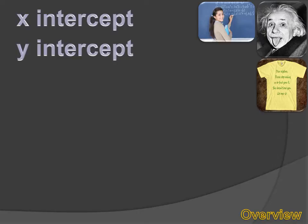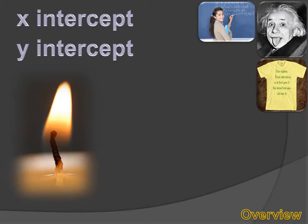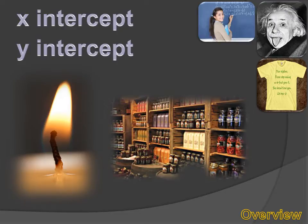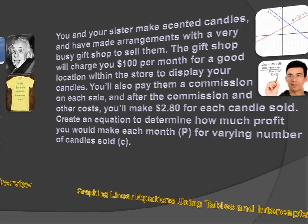And in order to make this kind of real, let's pretend that you've got a business — you and your sister make scented candles and have made an arrangement with a very busy gift shop to sell them. The gift shop will charge you $100 per month for a good location within the store to display your candles. You'll also pay them a commission on each sale, and after the commission and other costs, you'll make $2.80 for each candle sold. Create an equation to determine how much profit you will make each month — we'll call that P for profit per month — for varying numbers of candles sold, where C represents the number of candles sold in any particular month.